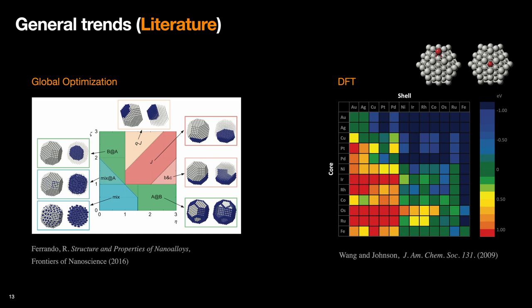And there are also DFT studies where they found this sequence, or the ordering of the metals, that reflects how strongly a metal tends to occupy the core.